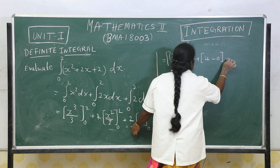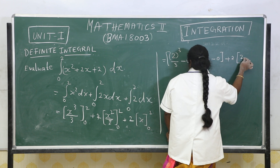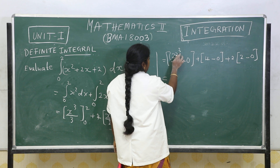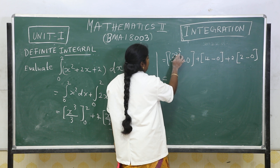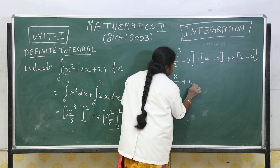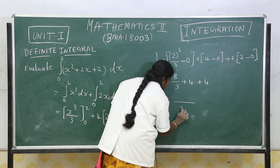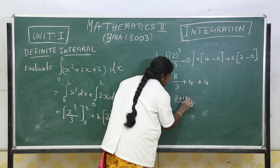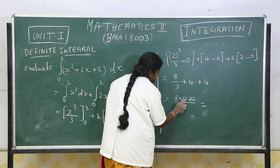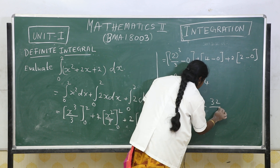Adding the results: 2 cubed equals 8, so 8 by 3, plus 4, plus 2. Taking LCM as 3: 8 by 3 plus 12 by 3 plus 12 by 3. Therefore 8 plus 12 equals 20, and 20 plus 12 equals 32. The final answer is 32 divided by 3.